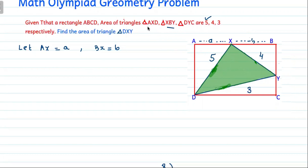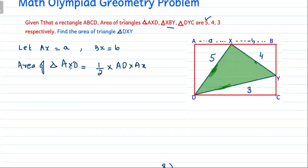The area of triangle AXT is 5 square units. We write: area of triangle AXT = ½ × AD × AX. Since the area is 5, we have 5 = ½ × AD × A. Therefore AD = 10/A.